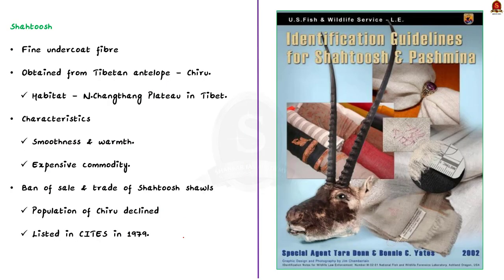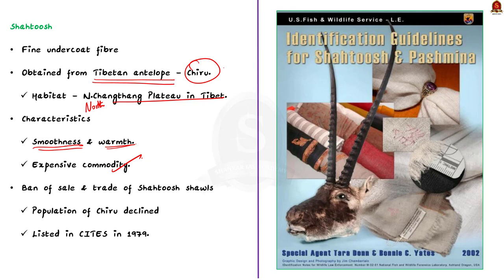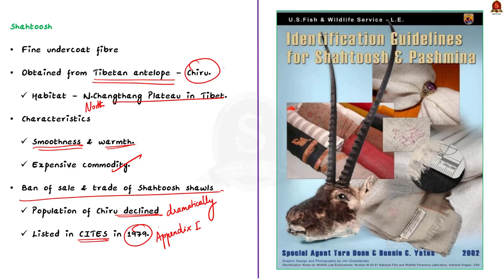Shahtoosh, known as the King of Wools, is a fine undercoat fiber obtained from the Tibetan antelope, locally known as Chiru. It is found mainly in the northern parts of the Changtang Plateau in Tibet and offers high levels of smoothness and warmth. However, the population of the Tibetan antelope declined dramatically, and CITES listed it in Appendix 1 in 1979, leading to a ban on the sale and trade of Shahtoosh shawls and scarves.